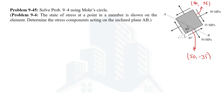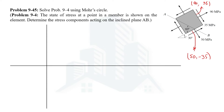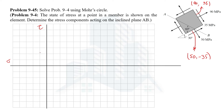To draw the Mohr's circle, we set up the normal and shear stress axes — horizontal for normal stress and vertical for shear stress. For better understanding, let's draw a grid where one unit equals 10 MPa. Now let's plot the two stress points on this normal-shear axis. First, let's plot the point at 90 and 35.